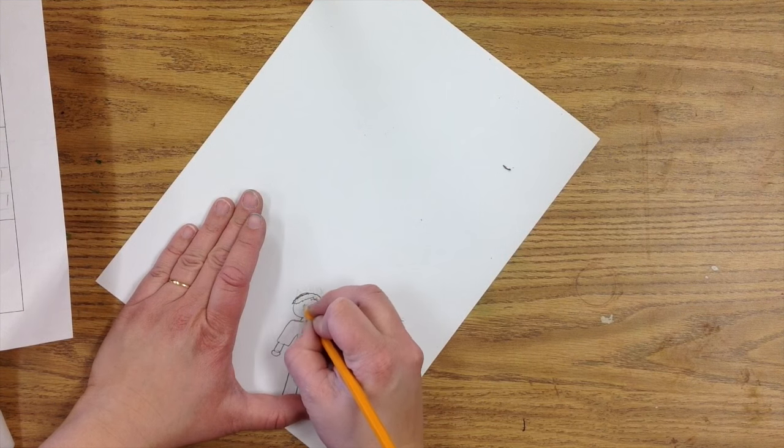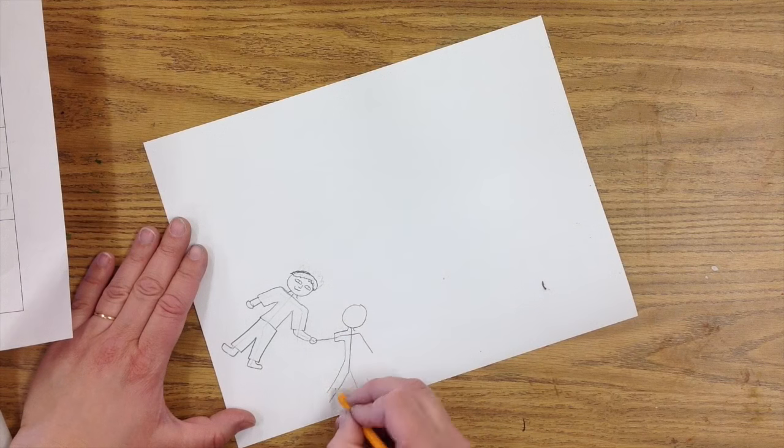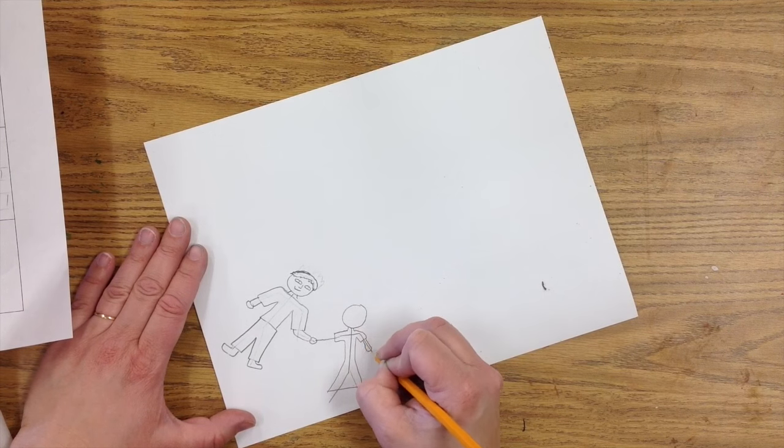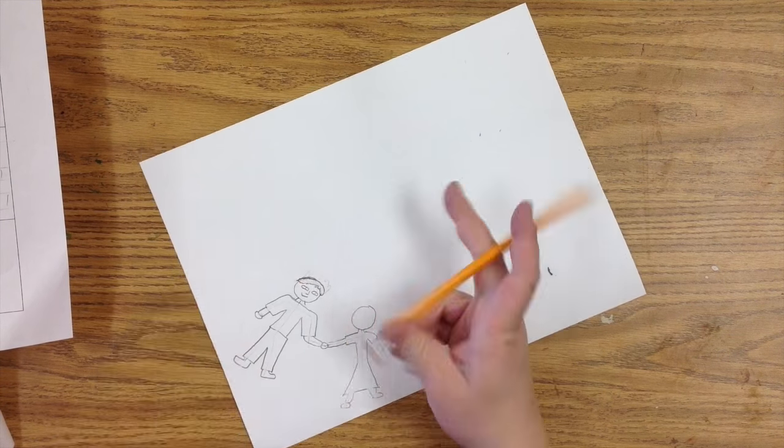So that's one way to draw people is to start with the stick figure, then draw in the clothes just by going around it, and then the muscles, and then erase the stick figure in between. And that's just a great way to draw people.